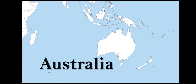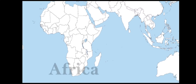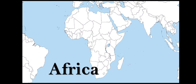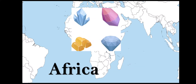Africa is the world's largest producer of diamonds, gold and platinum. South Africa, Zimbabwe and Zaire produce a large portion of the world's gold. The other minerals found in Africa are copper, iron ore, uranium, cobalt and bauxite. Oil is mainly found in Nigeria, Libya and Angola.